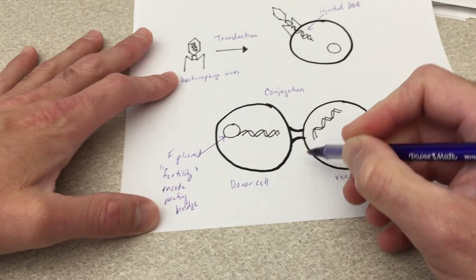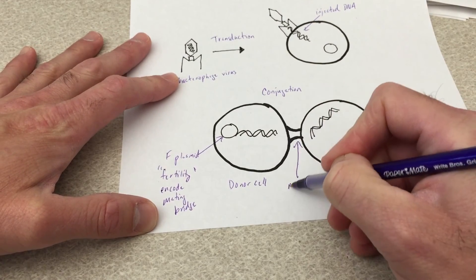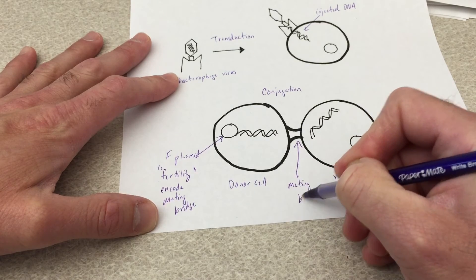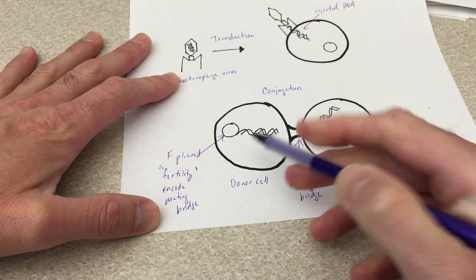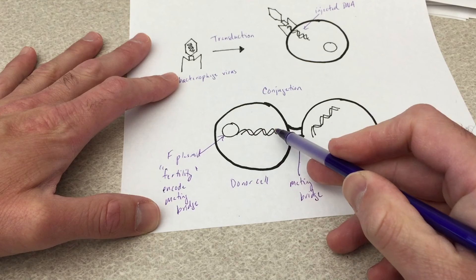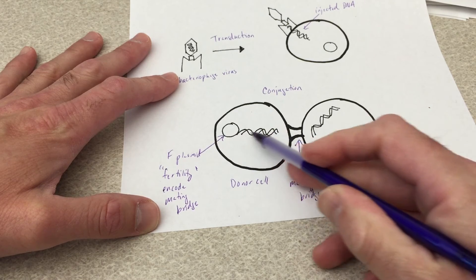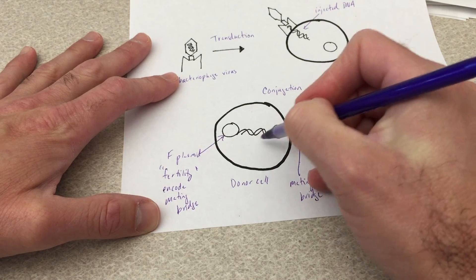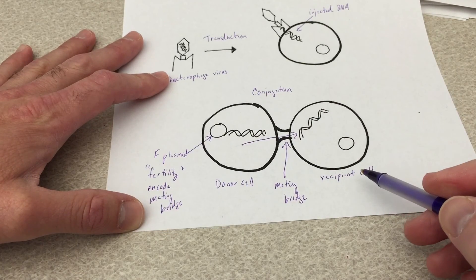Okay, so here is this mating bridge through which newly synthesized DNA, which can include resistance genes, can be transferred into the recipient cell.